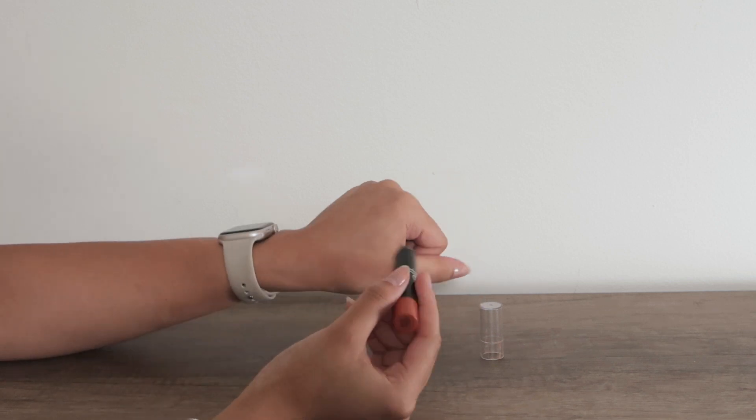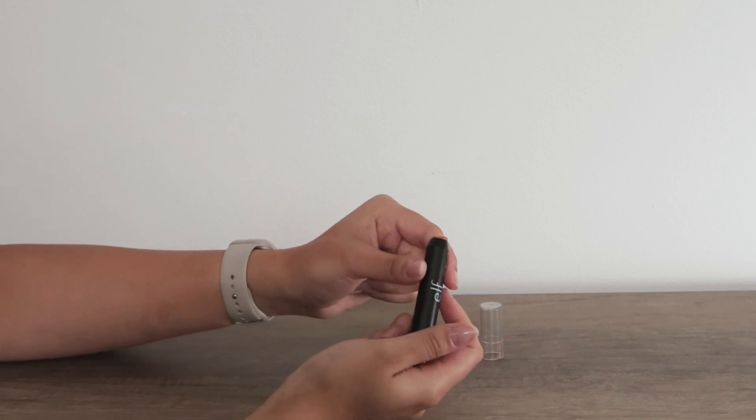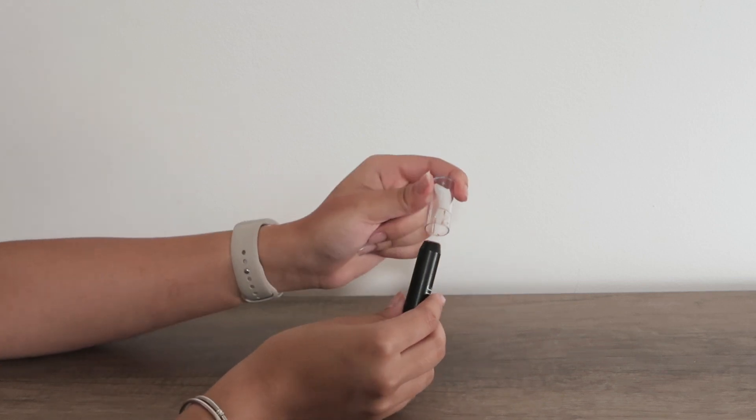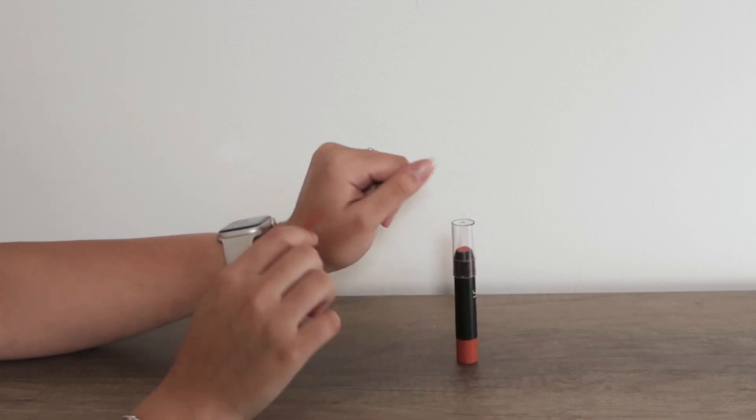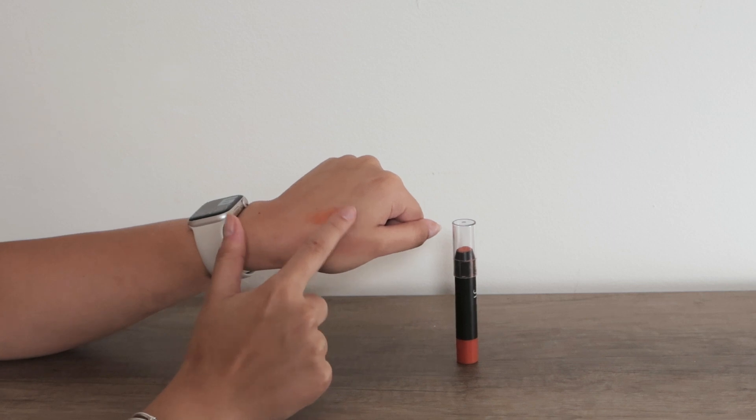This is great whenever you have blue or purple tints under your eye because orange will counteract that color perfectly and make it look like there's nothing there.